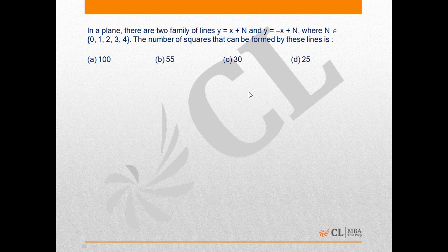The number of squares that can be formed by these lines is what we need to find. These lines are y equals x plus n where n is from 0 to 4, which means y will be equal to x, x plus 1, x plus 2, x plus 3,